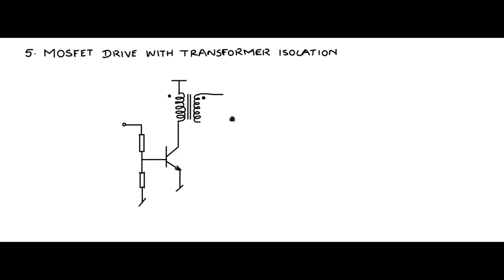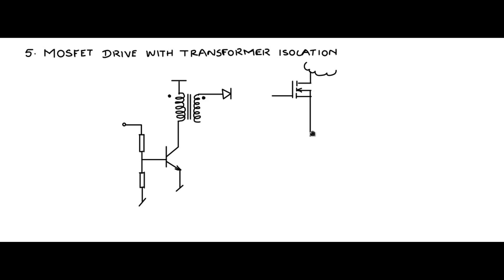The secondary of the transformer is passed through a diode, like in the case of the BJT drive, and it is connected to the power MOSFET. The power MOSFET is connected with the drain connected to the external load and the source connected to some other point in the power circuit. The transformer non-dot end is connected to the source and the dot end to the diode, and the diode is connected in series with the resistor in this fashion.